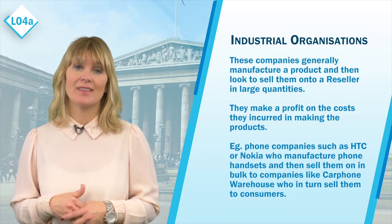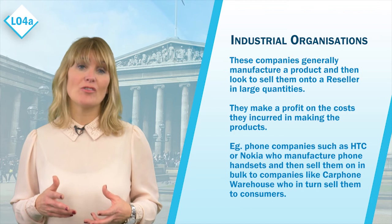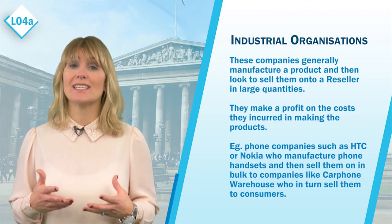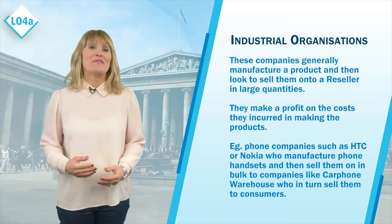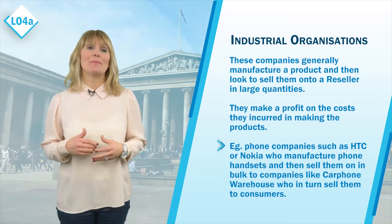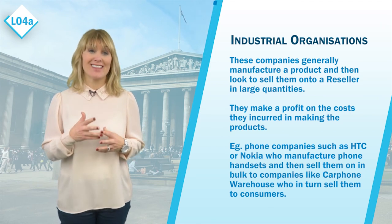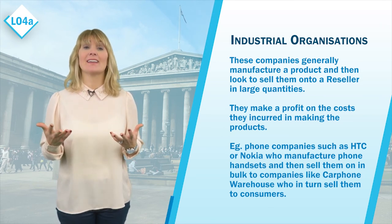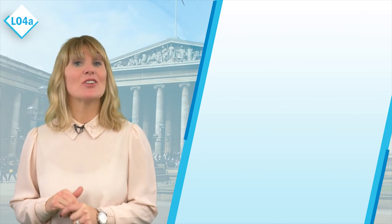The second type of organization to consider is industrial organizations. These companies generally manufacture a product and then look to sell it on to a reseller in large quantities, making a profit on the cost incurred in making the products. Famous manufacturers include phone companies such as HTC or Nokia, who manufacture phone handsets and sell them in bulk to companies like Carphone Warehouse, who in turn sell them on to consumers.